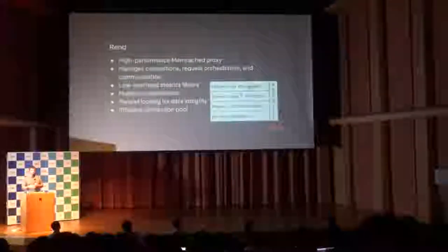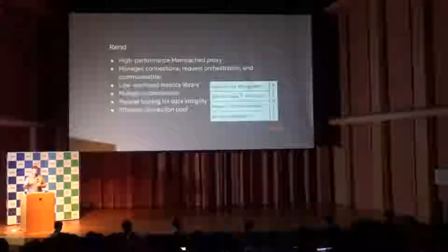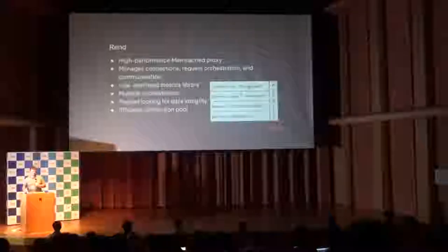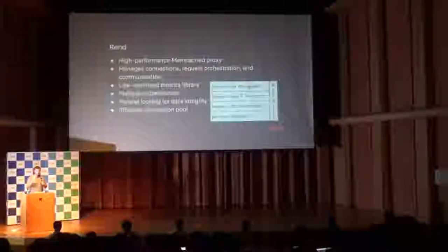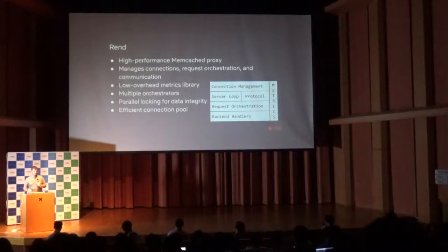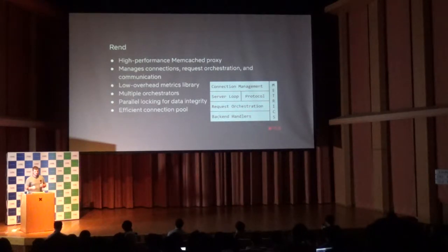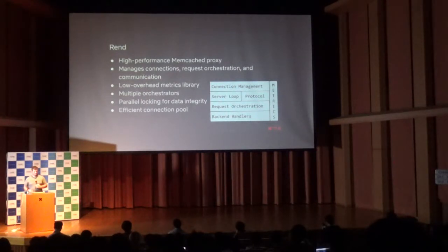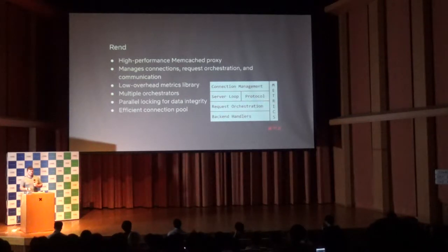REND is actually an open-source project on our GitHub. It is a high-performance Memcached proxy written in Go. It manages connections to the outside world, orchestrating requests between the L1 cache in Memcached and the L2 cache on disk — similar to the way a CPU works. It includes its own metrics library, multiple different orchestrators for different use cases, a feature I call parallel locking that prevents more than one request on the same piece of data at the same time, and an efficient connection pool.